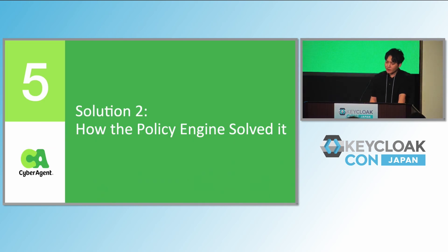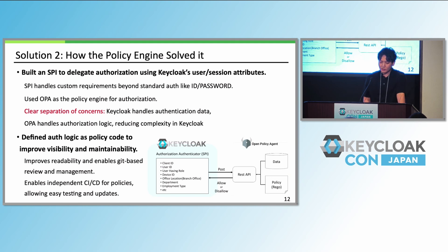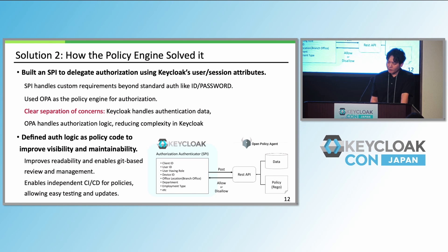How has the policy engine solved it? We built a custom SPI to delegate authorization from Keycloak to OPA. This keeps authentication in Keycloak and authorization in OPA, creating a clear separation of concerns. We write policy as code, which improves readability and enables Git-based review. We also use CI/CD to deploy policies independently of Keycloak.